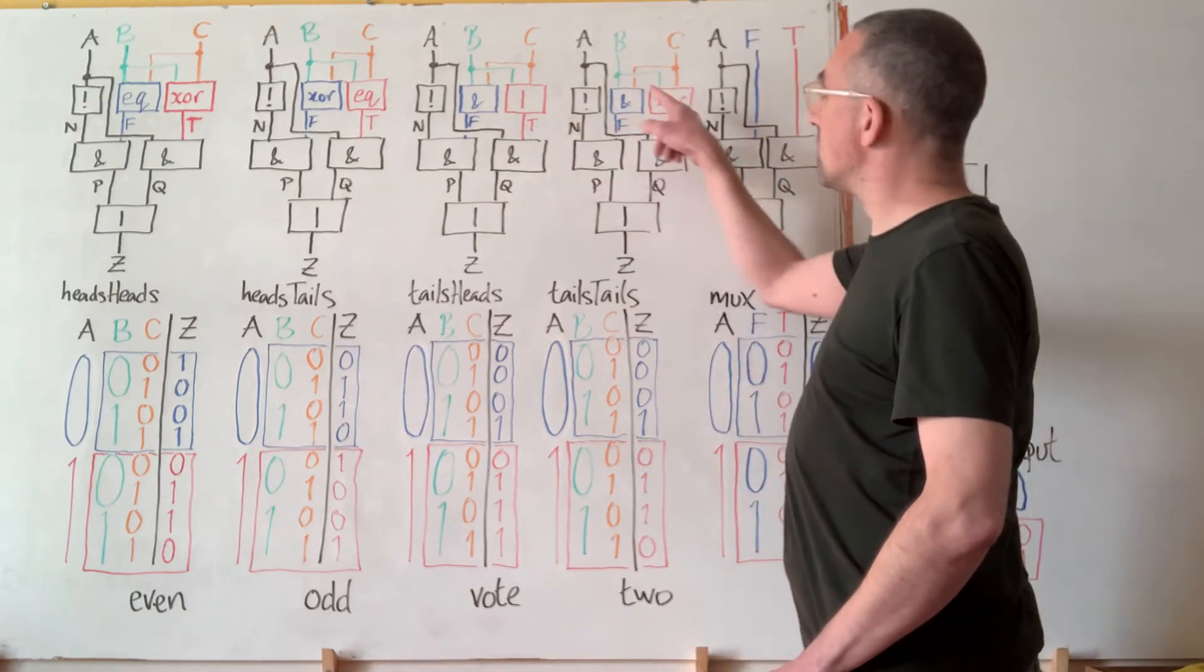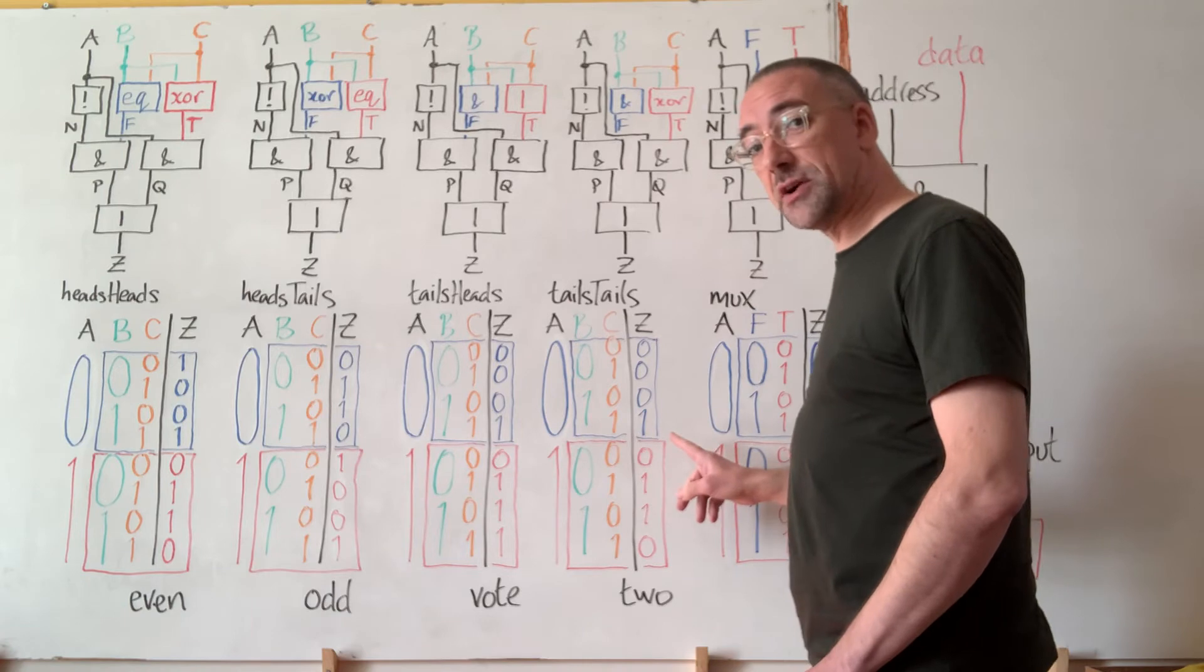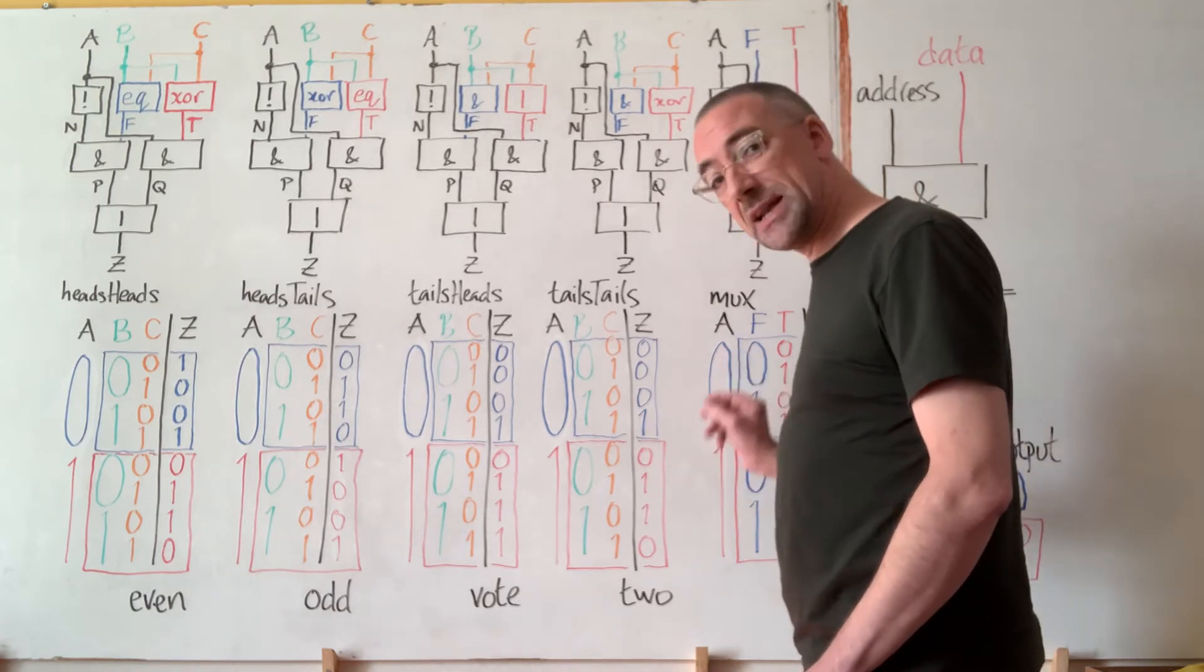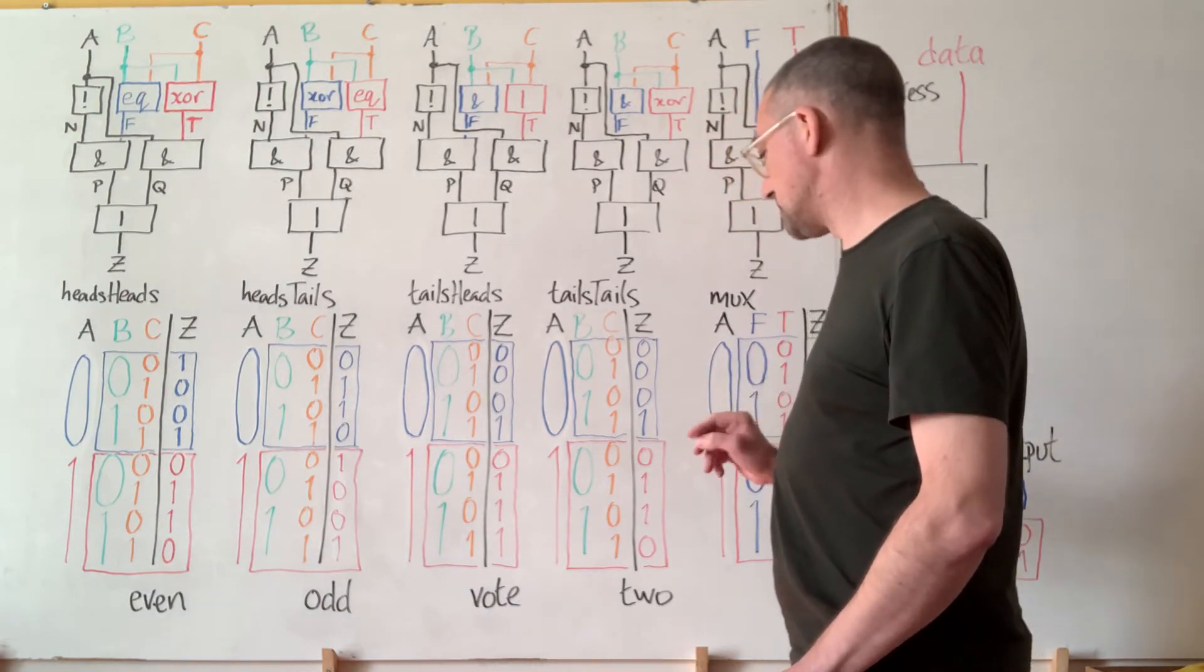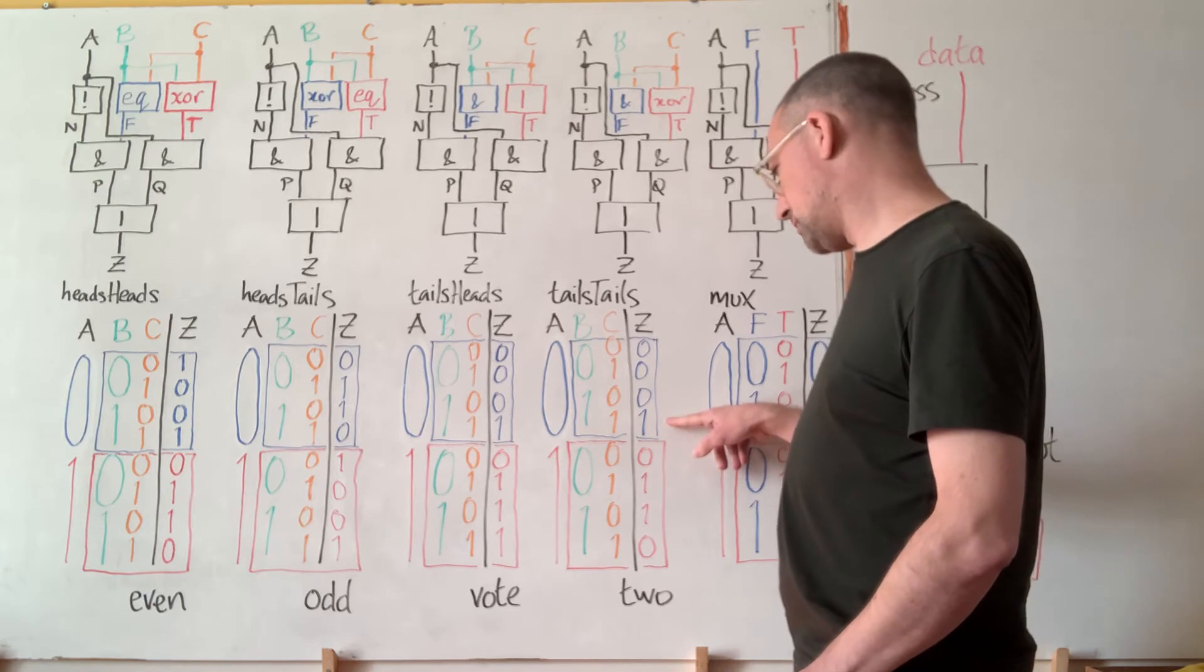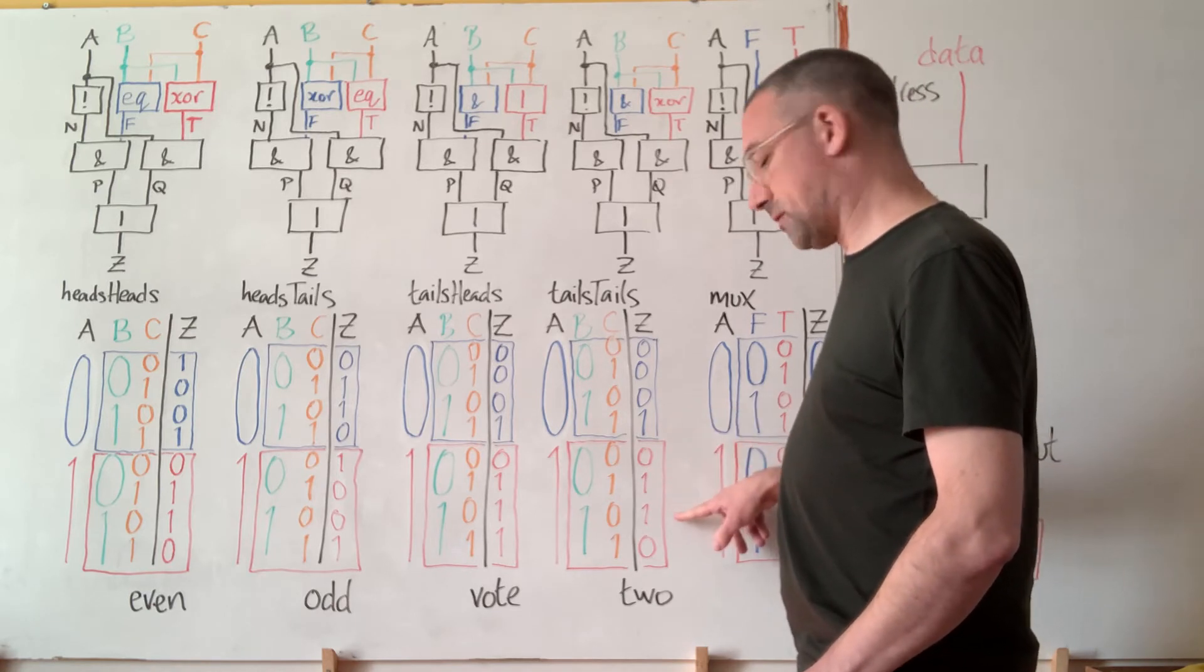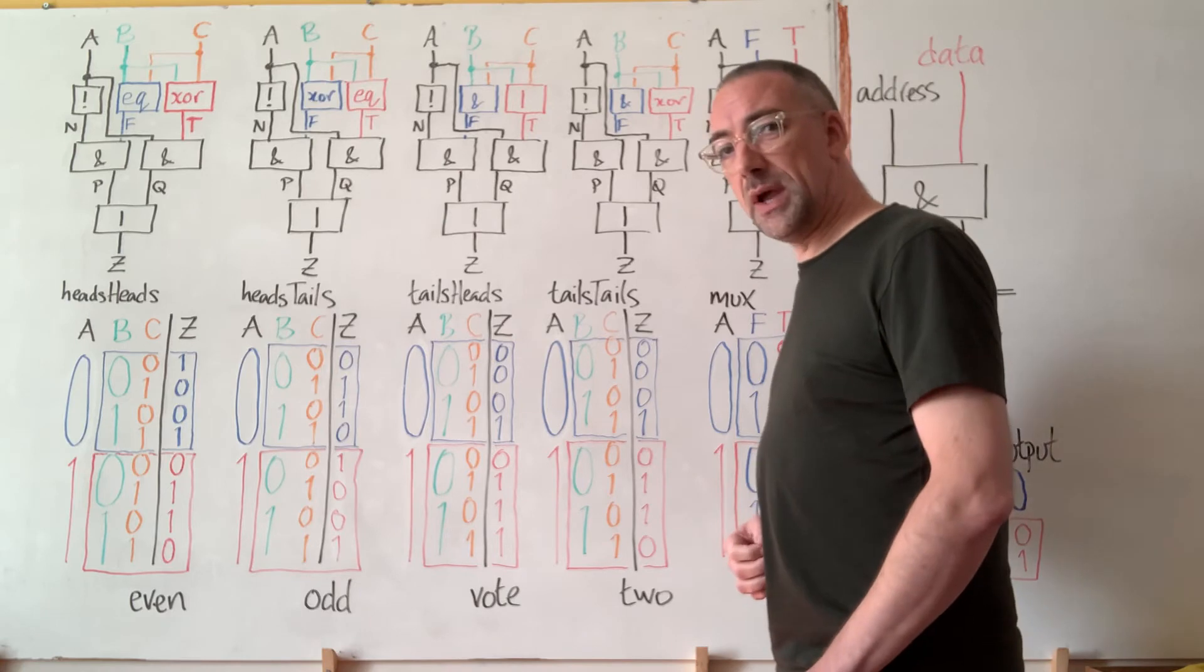Meanwhile swapping out that OR for an XOR gives us a circuit that tells us if exactly two of the inputs are ones. So you can see 0, 1, 1, 1, 1, 0, 1, 1, 1, 0.